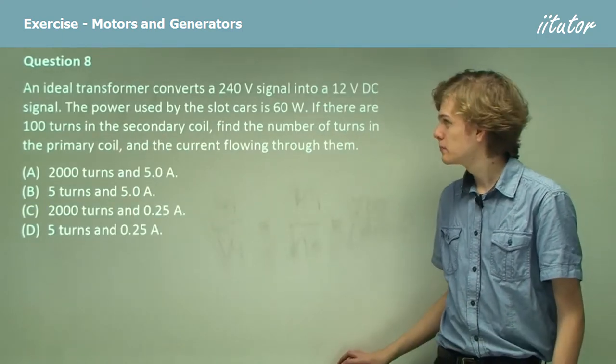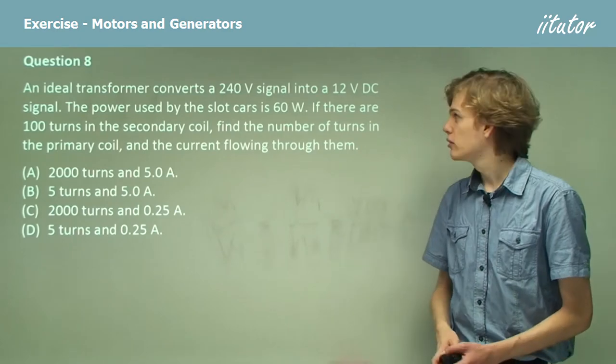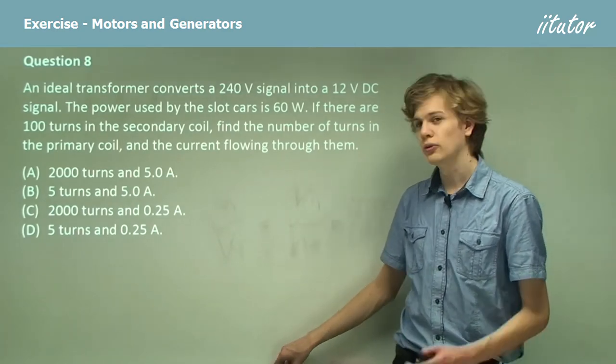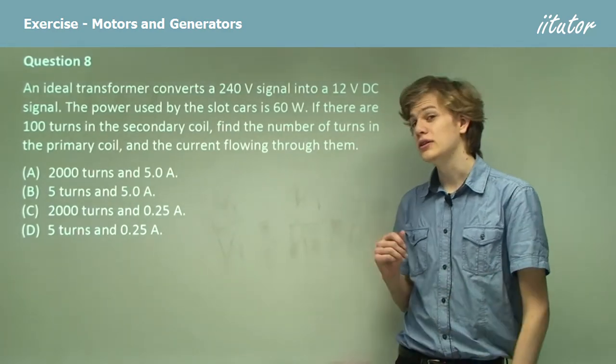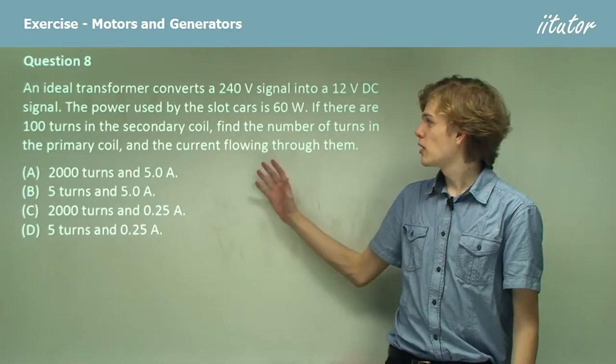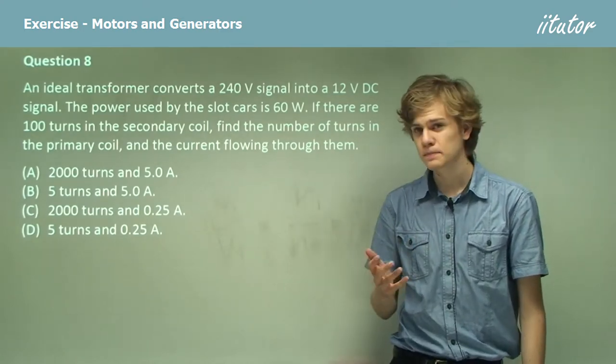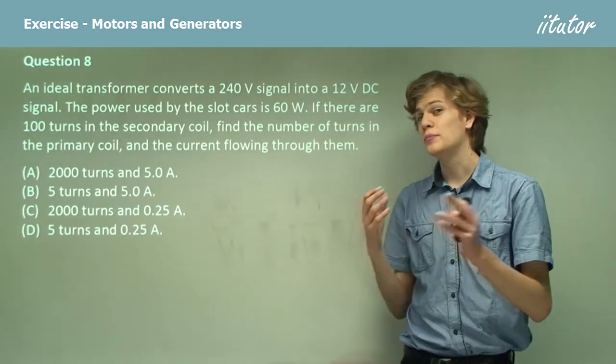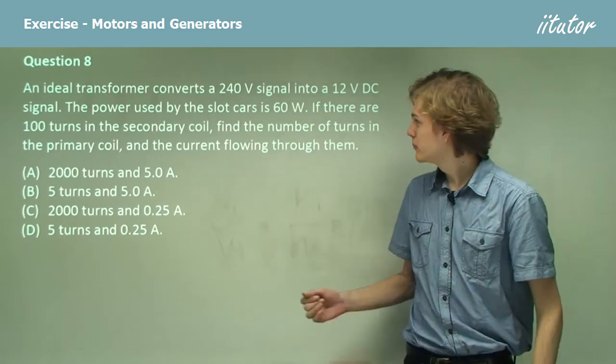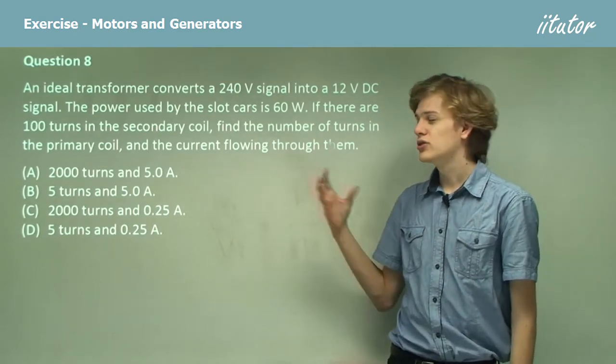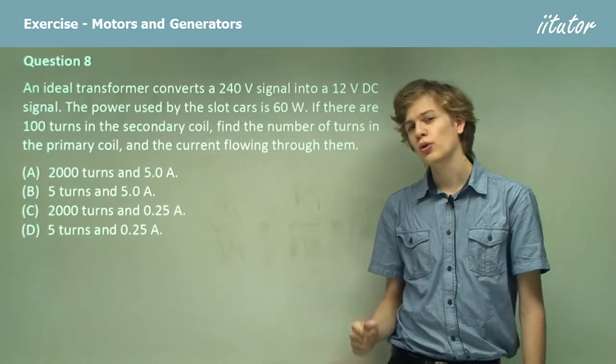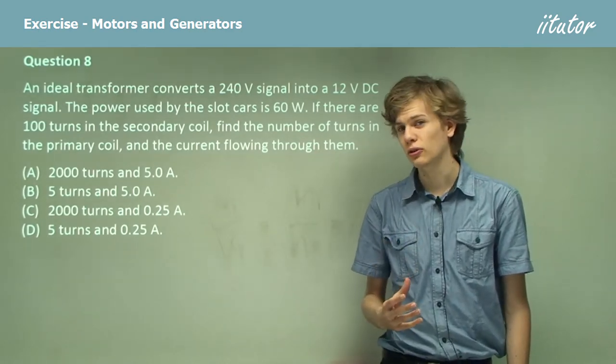Question 8. An ideal transformer converts a 240 volt signal into a 12 volt DC signal. The power used by the slot cars is 60 watts, which of course will be the same as voltage times current. If there are 100 turns in the secondary coil, find the number of turns in the primary coil and the current flowing through the primary coil.